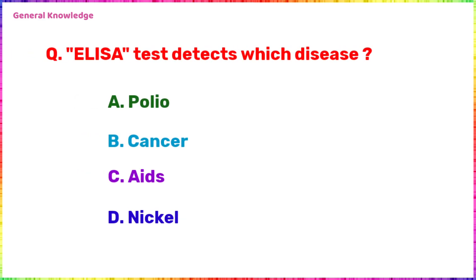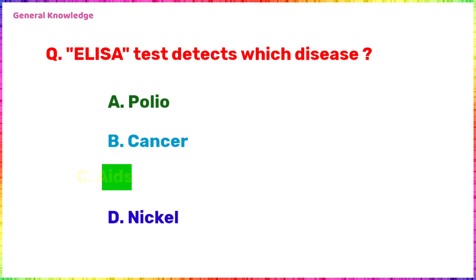The ELISA test detects which disease? The correct answer is option C, AIDS.